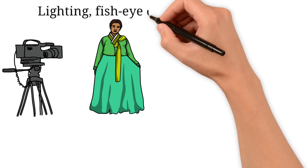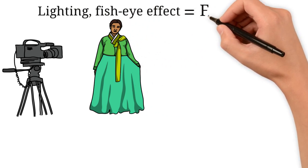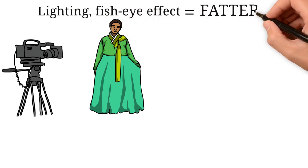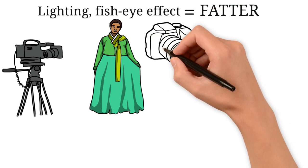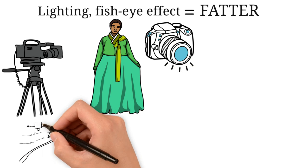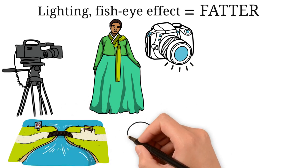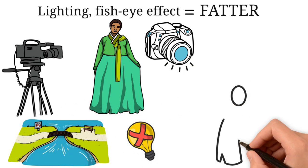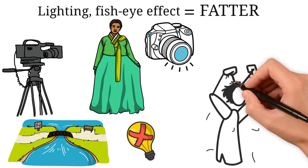In photographs, lighting and other camera effects, such as the fisheye effect, can make you appear fatter. Using wide-angle lenses might result in a fatter look in pictures, and also, camera effects, such as the fisheye effect, or just bad lighting, might be the cause of you looking fatter in pictures than you actually are.